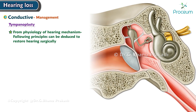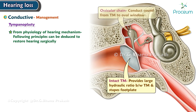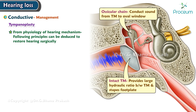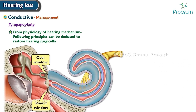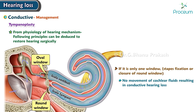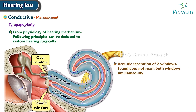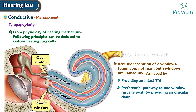From the physiology of the hearing mechanism, the following principles can be deduced to restore hearing surgically. An intact tympanic membrane provides a large hydraulic ratio between the tympanic membrane and the stapes footplate. The ossicular chain conducts sound from the tympanic membrane to the oval window. Two functioning windows are needed: one on the scala vestibuli to receive sound vibrations and the other on the scala tympani to act as a relief window. If there is only one window — as in stapes fixation or closure of the round window — there will be no movement of cochlear fluids, resulting in conductive hearing loss. Acoustic separation of two windows ensures sound does not reach both windows simultaneously, achieved by an intact tympanic membrane providing a preferential pathway to the oval window, an ossicular chain, and the presence of air in the middle ear.